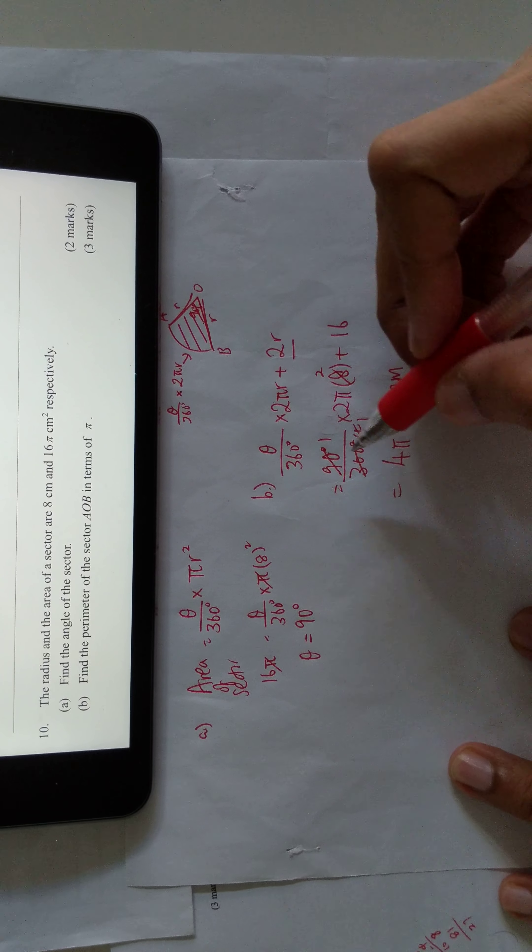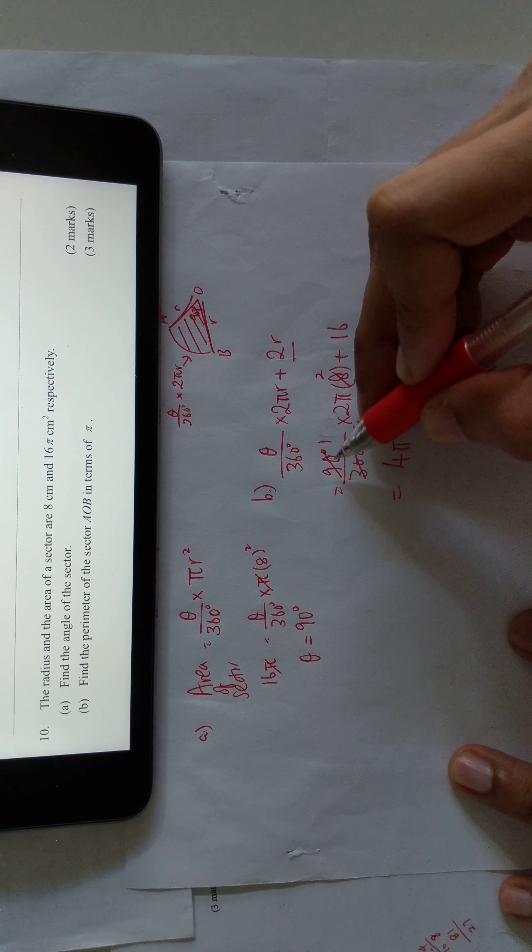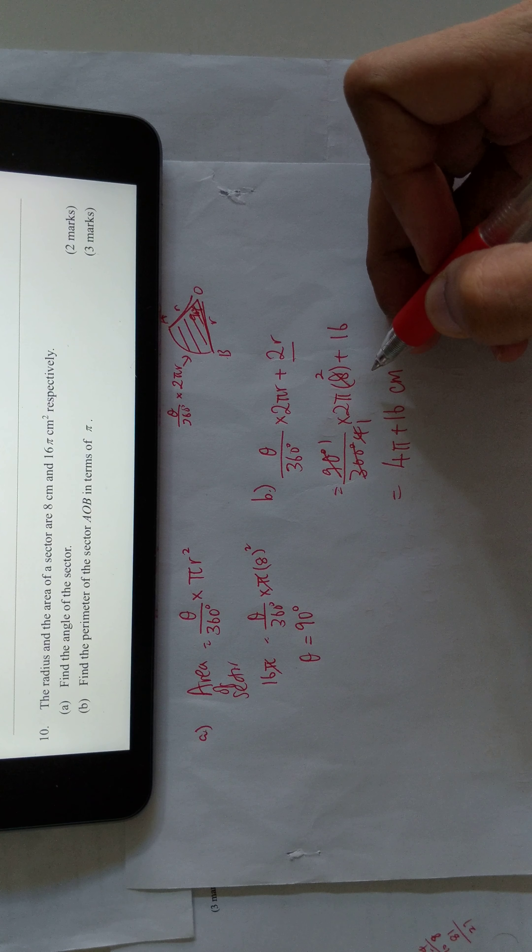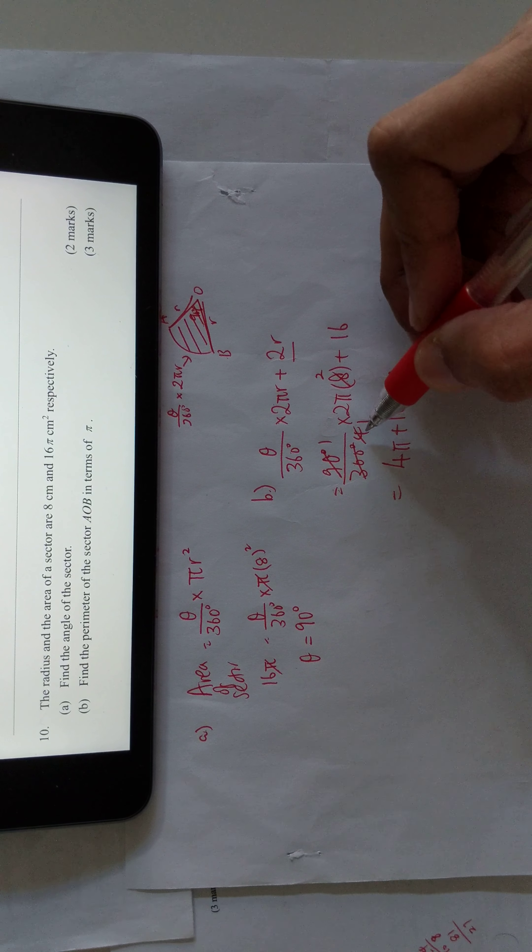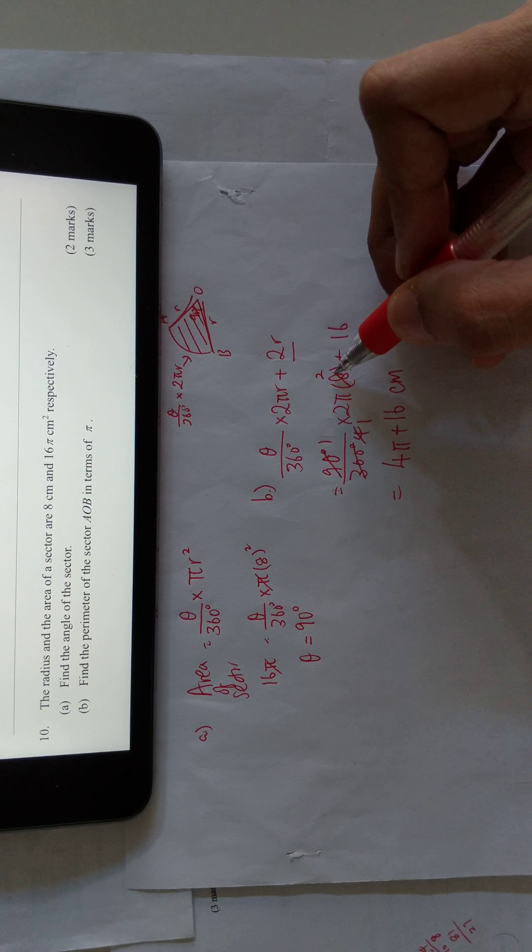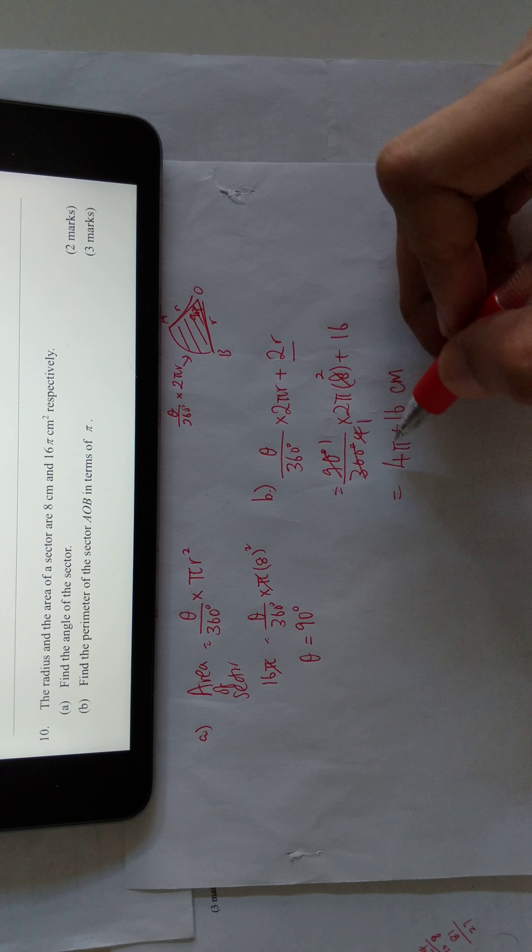To save time, it's 1 over 4 because 90 is a quarter of 360. Then 4 simplifies with this 8, so 2 times 2 is 4, giving us 4π and 16.